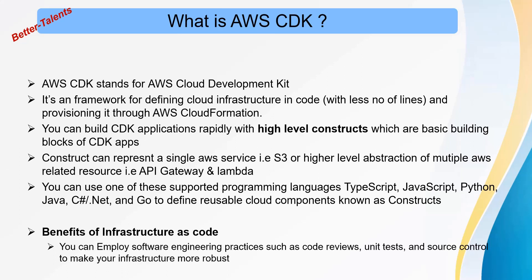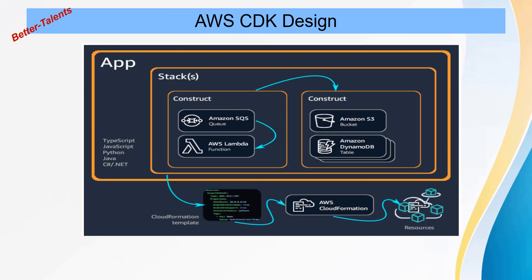The benefits of infrastructure as code include the ability to employ software engineering practices such as code reviews, unit tests, and source control to make your infrastructure more robust. You can check in your code to GitHub, Bitbucket, or any other repository used for source control maintenance.